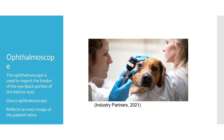The ophthalmoscope is used to inspect the front and back portion of the interior of the eye. A direct ophthalmoscope reflects an erect image of the patient's retina, and is used when diagnosing optic nerve atrophy or neuritis. Ophthalmoscopy can only be done in low light to reflect a clear color image of the optic nerve. The retina can be poorly visualized if the patient is suffering from nuclear sclerosis or hazy eyes.